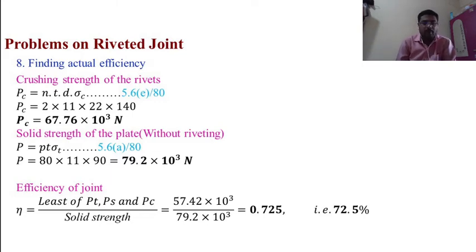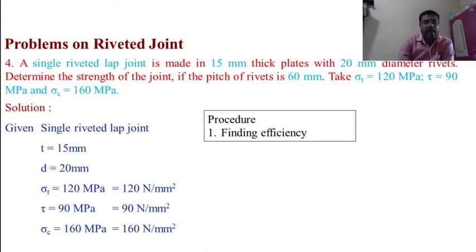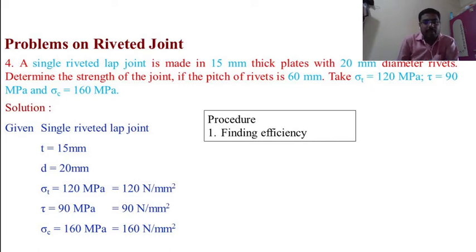We can discuss any doubts in this problem. Moving to problem number four: a single riveted lap joint is made in 15 mm thick plates with 20 mm diameter rivets. Determine the strength of the joint if the pitch of the rivet is 60 mm. Given: σT = 120 MPa, shear stress τ = 90 MPa, and crushing strength σC = 160 MPa.